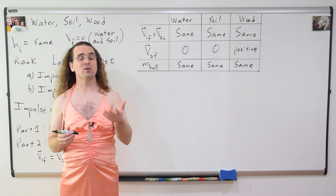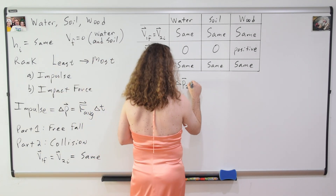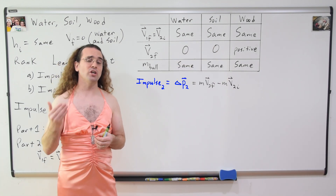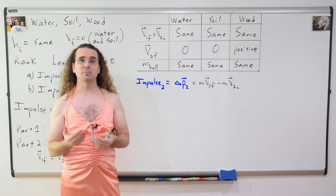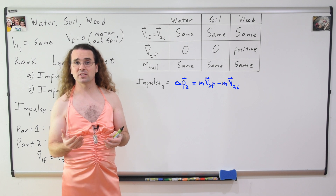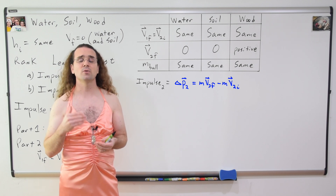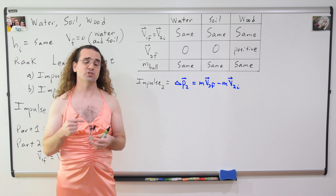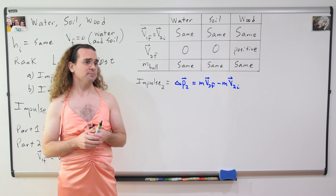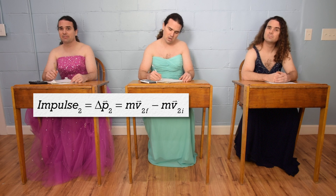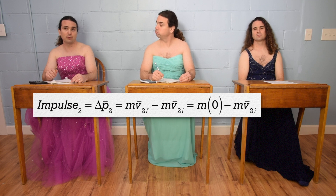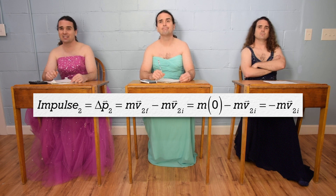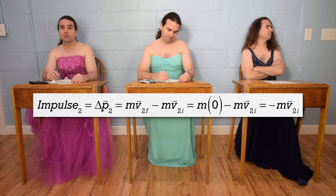Let's take a look at Part A: the impulse during the collisions. We know the impulse for part two equals the change in momentum for part two, and change in means final minus initial, and momentum is mass times velocity. So the change in momentum for part two is m·v_final minus m·v_initial. We know the final velocity for part two for both the water and the soil is zero; therefore, both water and soil have an impulse of negative mass times initial velocity, so the impulse for the water and soil during the collision is the same.